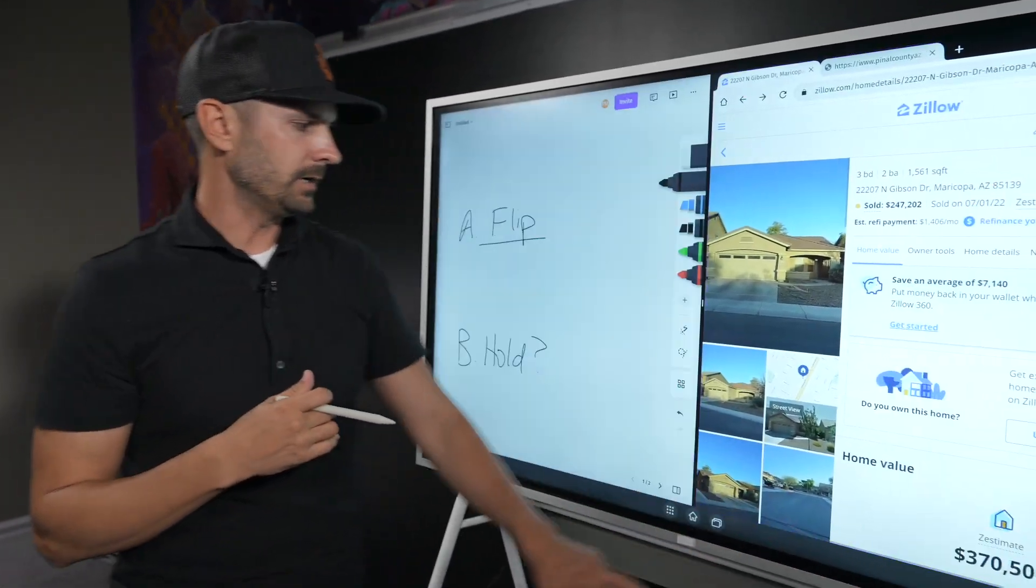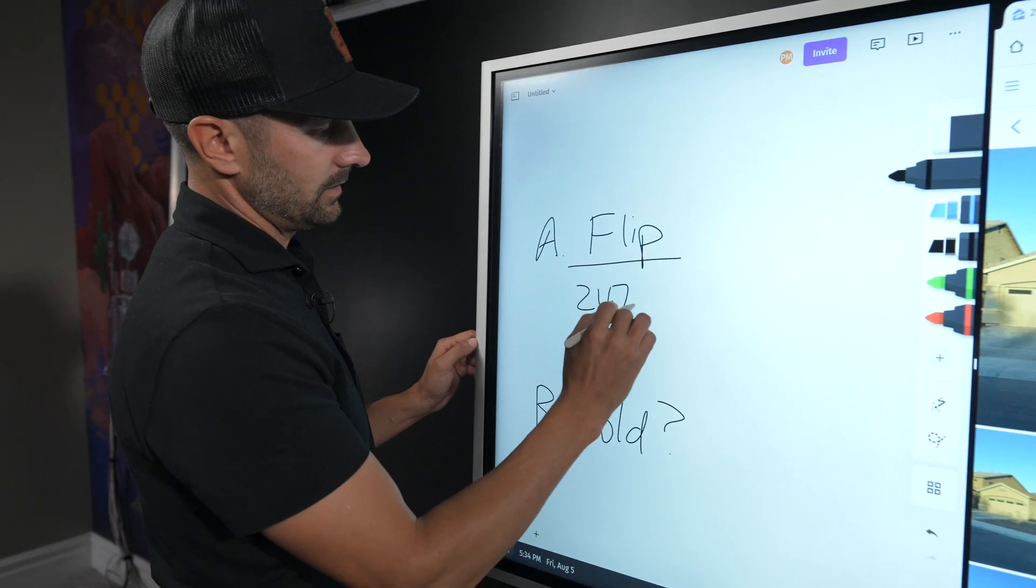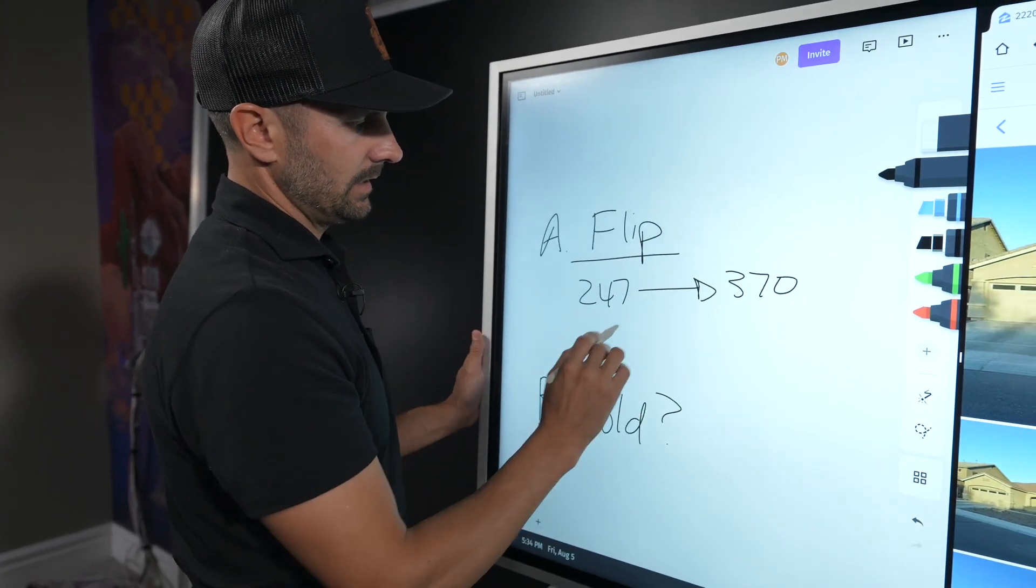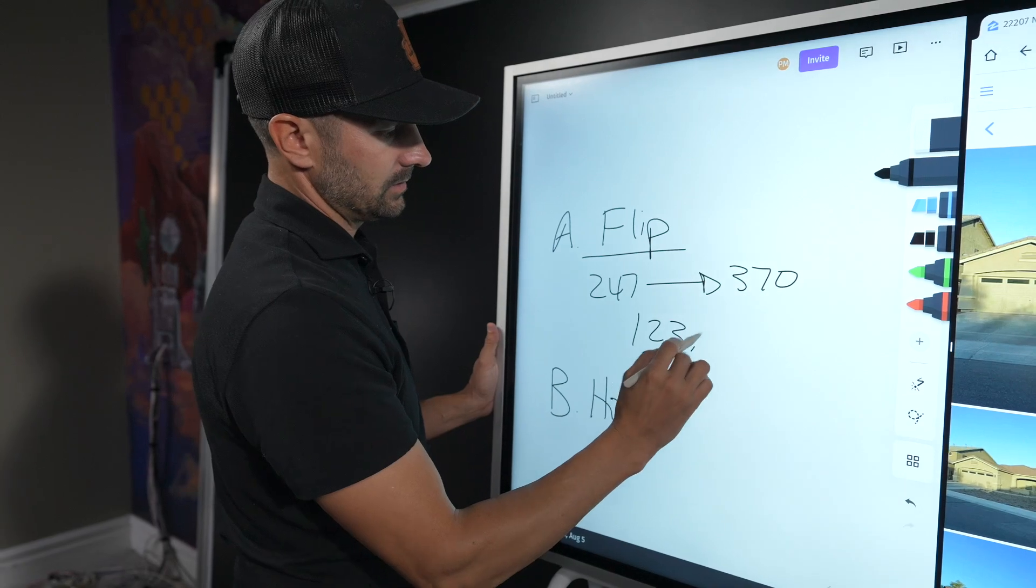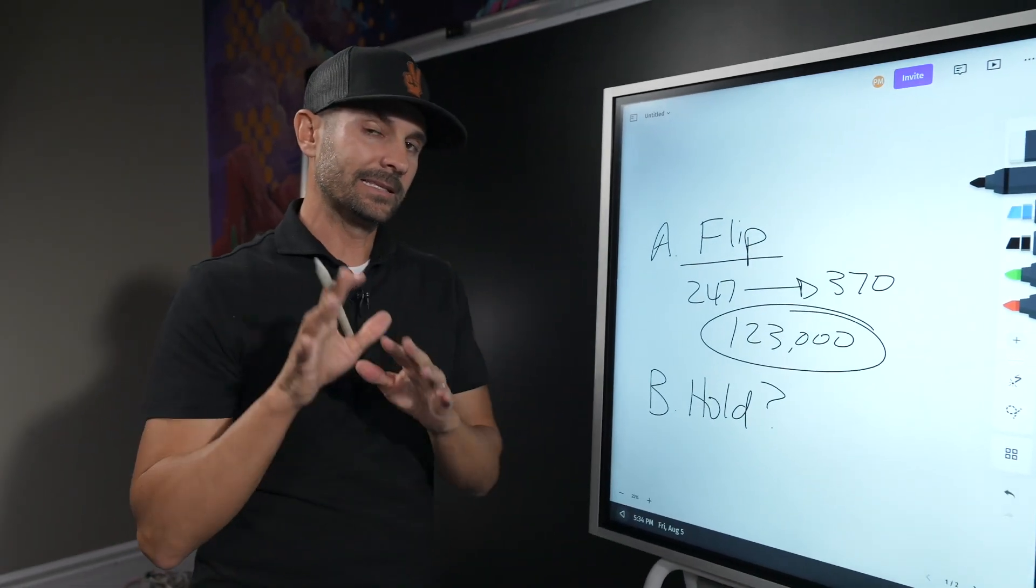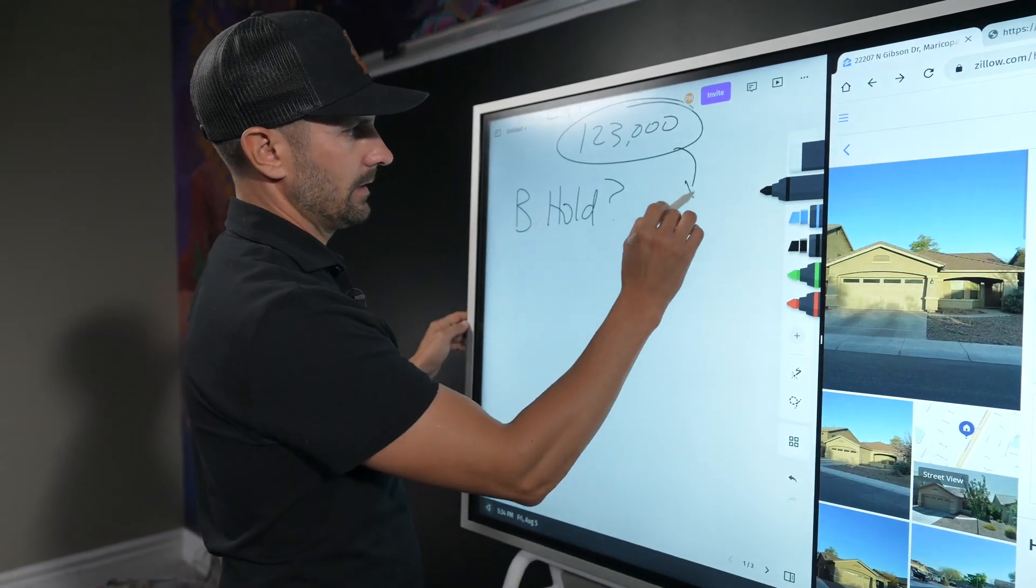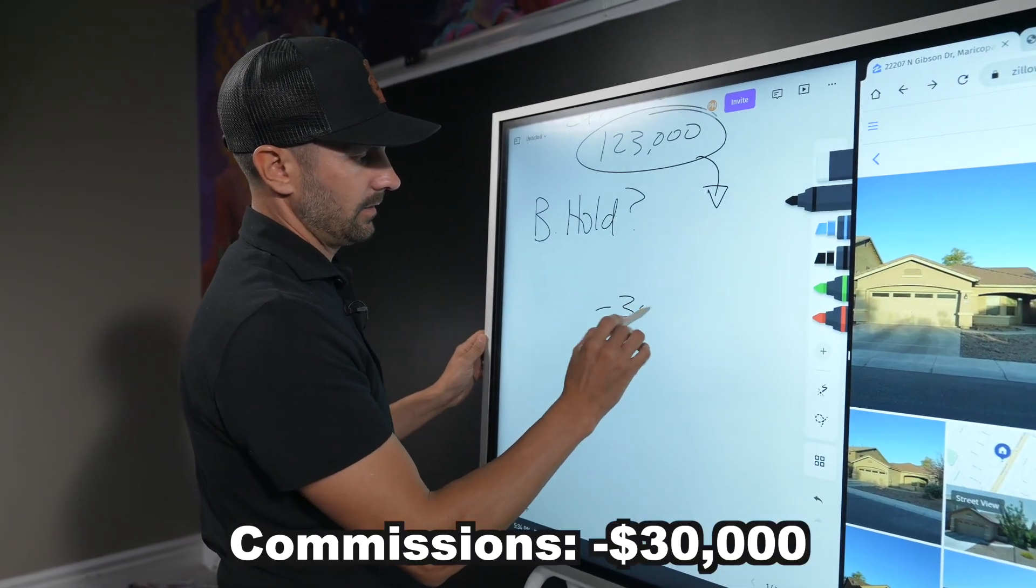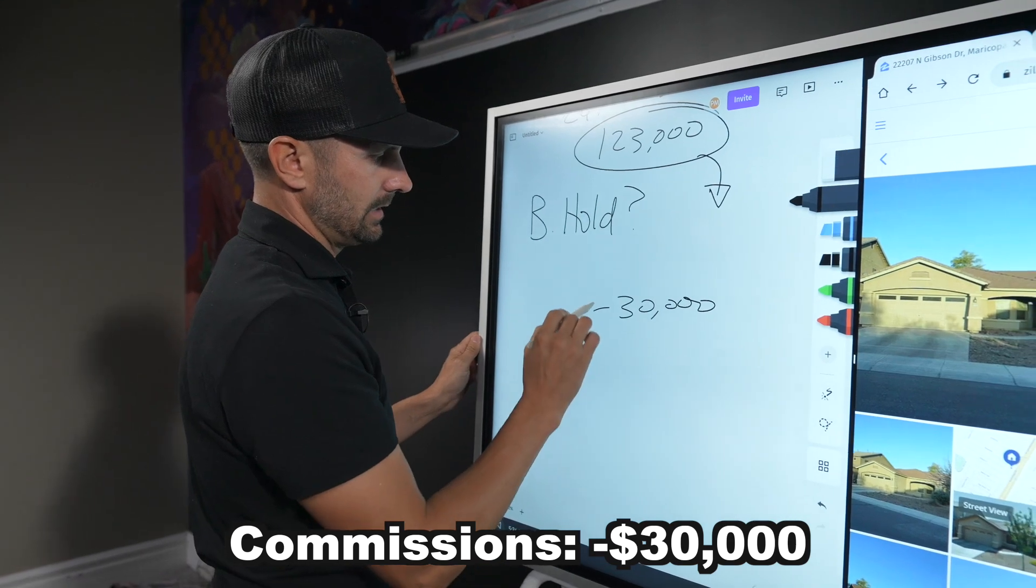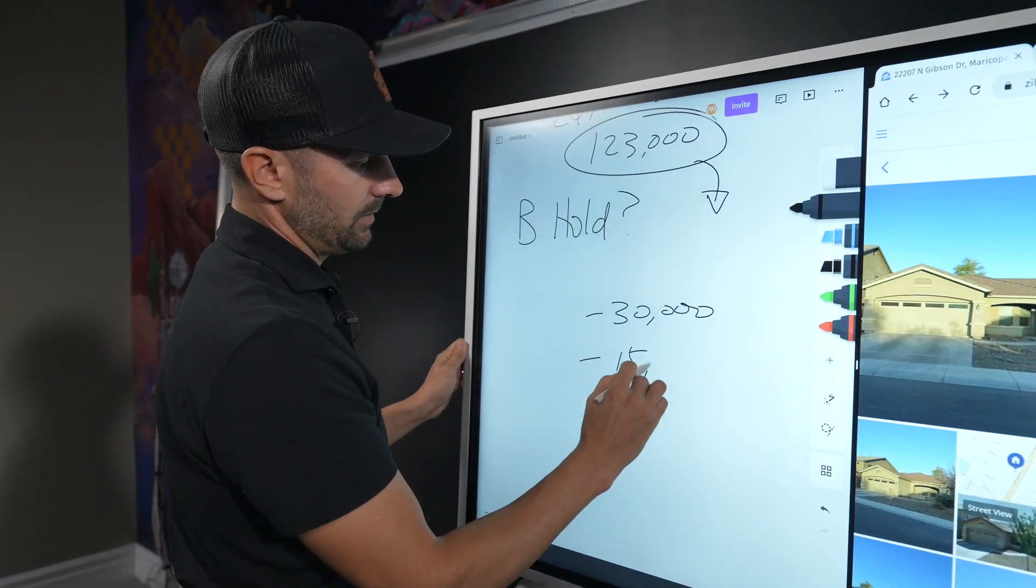So if you go back over here, if we're into it $247k and we go and sell it for $370k, the difference between that is about $123,000. That's a pretty good spread, but that's not your net profit. Your net profit on $123,000 spread is you've got to take out $30,000 in commissions to agents to sell the property for you.